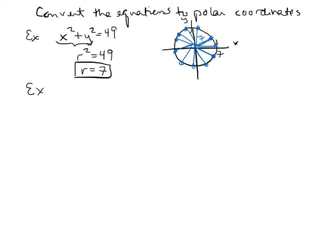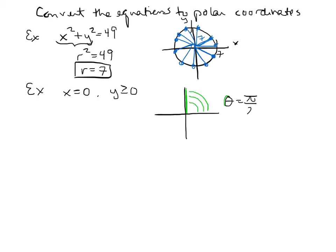Next, let's convert the line x equals 0 where y is greater than or equal to 0. That's the positive y-axis. That line is always the same angle from the positive x-axis, which is 90 degrees or π/2. So in polar coordinates, this line is simply described as theta equals π/2. The radius is everything — it's infinite because that line is infinite.